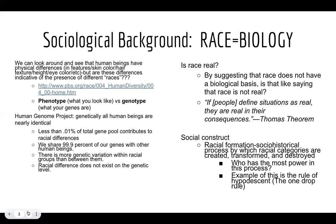The amount of genetic variation within racial groups is greater than the amount of genetic variation between them. You are just as likely to have more genetically in common with someone who doesn't share your racial identity than with someone who does. So, point blank, racial difference does not exist on the genetic level.